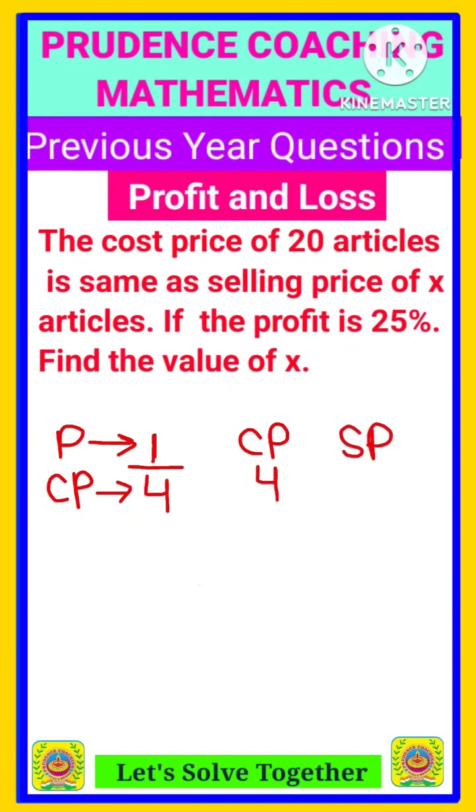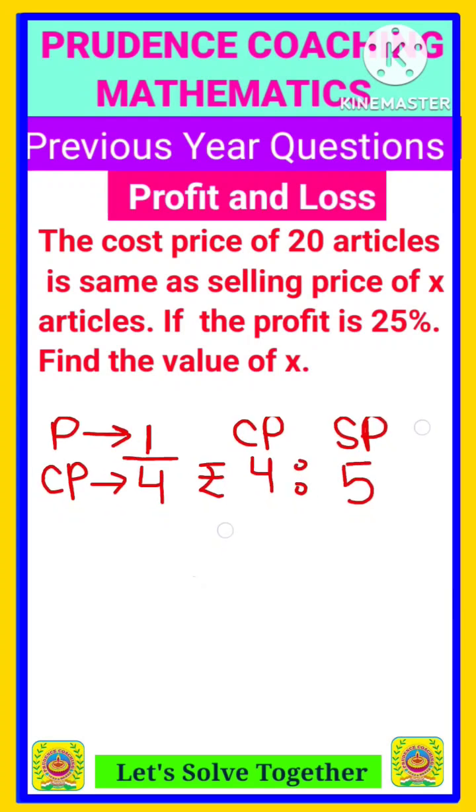Then only will you earn a profit. Whenever the selling price is more than cost price, you earn a profit. So here 4 plus 1 you need to add, will get here selling price. So here this is the ratio of cost price and selling price.